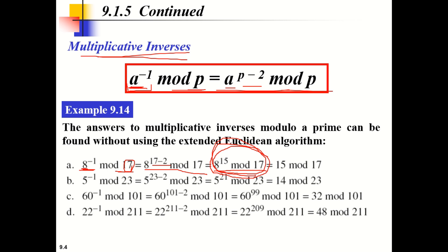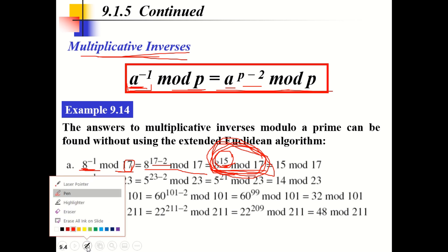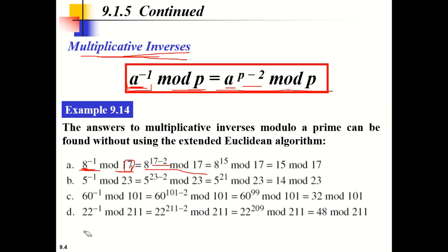If Fermat's theorem or Euler's theorem applies directly, we can use that; otherwise we can use the factorization method. For the factorization, we find powers of 8 by doubling: 8 raised to 1 mod 17 gives 8, then 8 raised to 2 mod 17 gives 64 mod 17 which equals 13, and 8 raised to 4 mod 17 can be written as 8 squared times 8 squared, giving 13 times 13 mod 17, which equals 16.